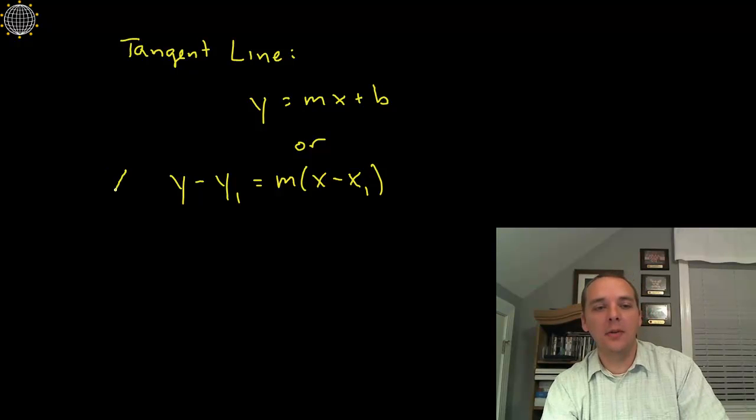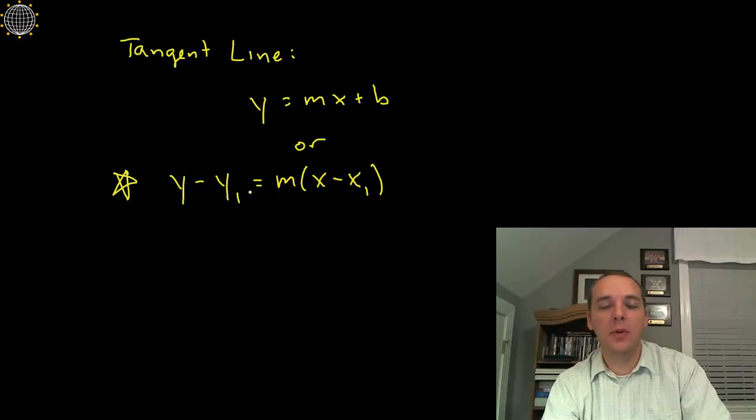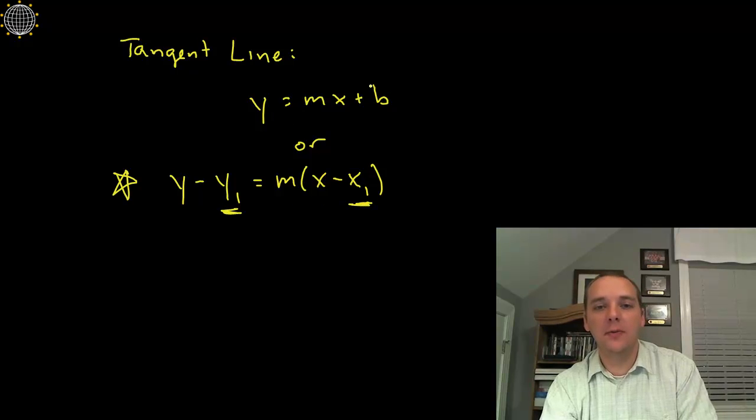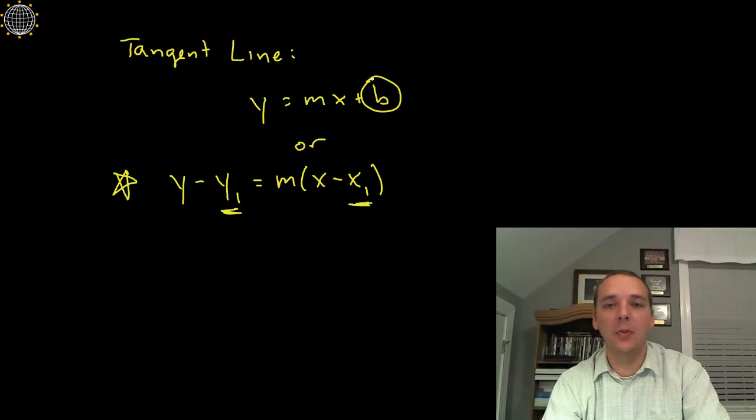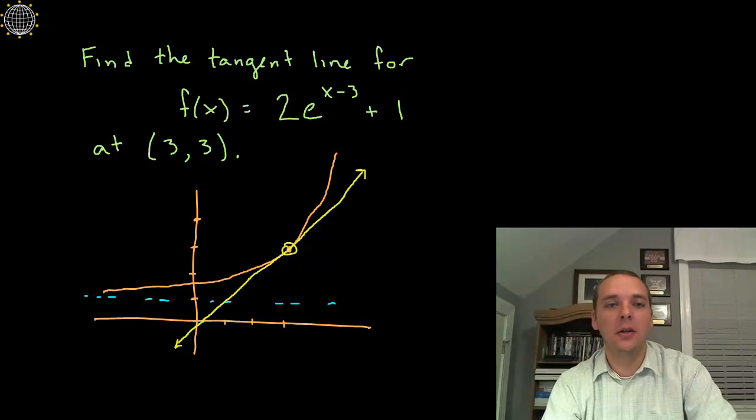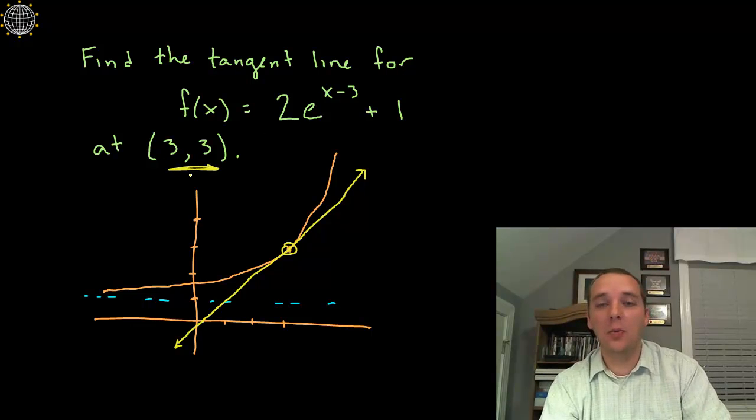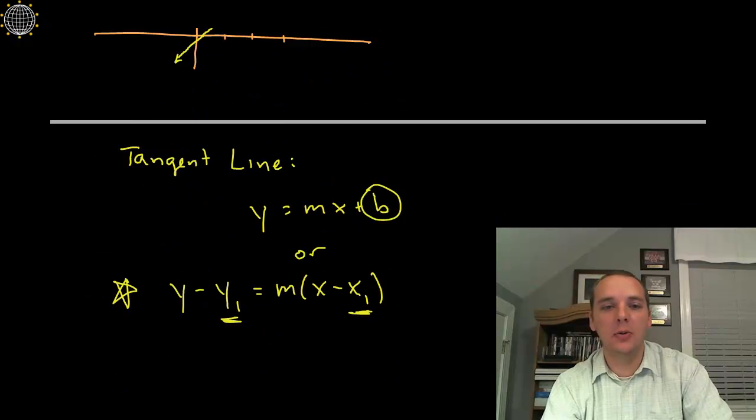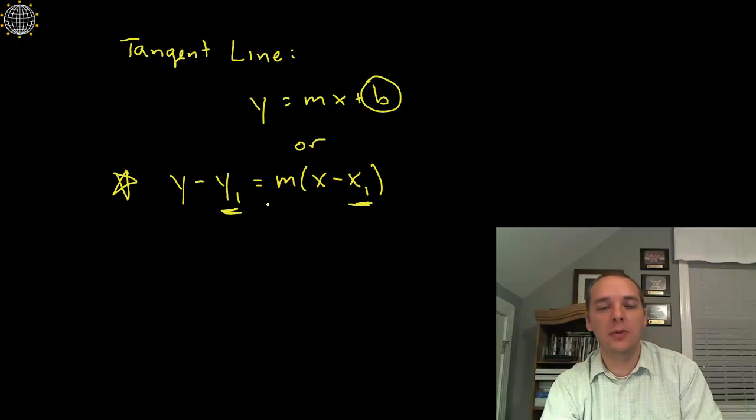I'm kind of of the opinion that this form here would be our best bet for this type of problem because this one allows you to have any given XY point. For the slope intercept form the B has to be the Y intercept. But the problem for our particular exercise is that the point that we're given is not on the Y axis, it's not a Y intercept. So that's why I'm kind of leaning towards using point slope form instead.